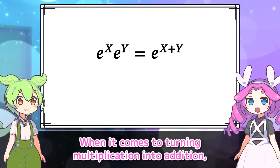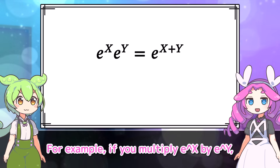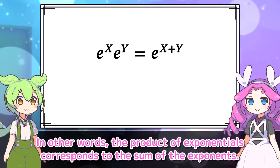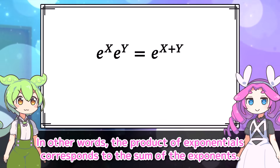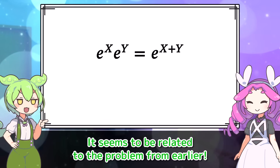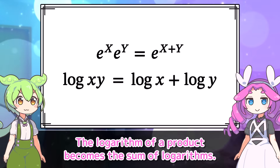When it comes to turning multiplication into addition, exponential functions and the product rule come to mind. For example, if you multiply e to the x by e to the y, the result is e to the power of x plus y. In other words, the product of exponentials corresponds to the sum of the exponents. So the result of multiplication ends up as addition — it seems to be related to the problem. Also, the inverse function of the exponential, the logarithm, has similar properties: the logarithm of a product becomes the sum of logarithms.